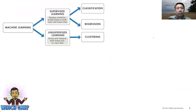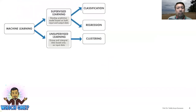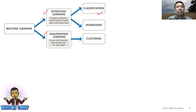Let's recap the classification of machine learning. Machine learning can be classified into two major categories: supervised learning and unsupervised learning. Supervised learning means the input and output data, or annotated data, is part of the training. From here you can do classification — for example, identifying between apple and orange as two classes.